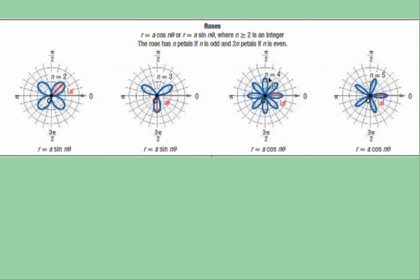When n is even, you double that, and that will tell you how many petals you have. So here, when n is 2, there are 4. Here, n is 4, so there are 8 petals.